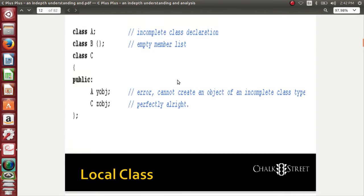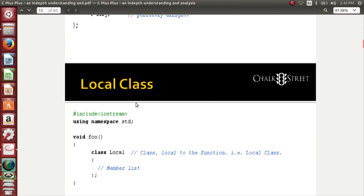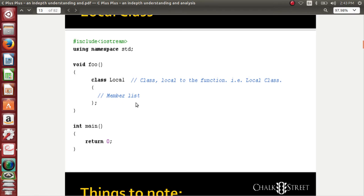What is the incomplete class? Incomplete class is abstract in nature. For example, if I have a class just with a declaration done — Class A is here with no content, Class B is empty, Class C has some content. Since Class A and Class B are not fully used, I call it an incomplete class. This is another type of class that we need to know.